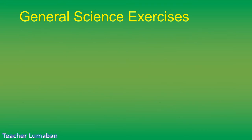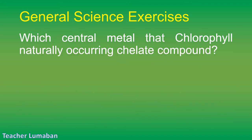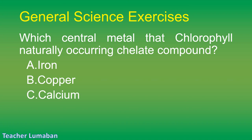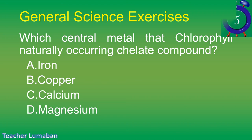Which central metal does chlorophyll, a naturally occurring chelate compound, contain? Letter A: iron. Letter B: copper. Letter C: calcium. Letter D: magnesium.